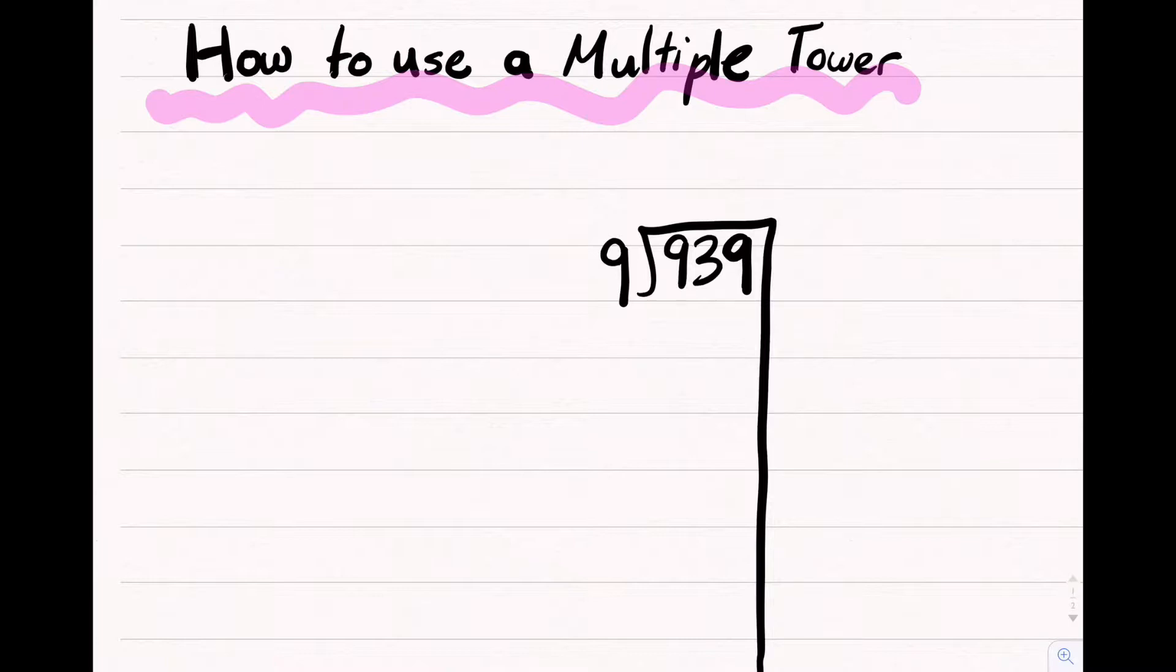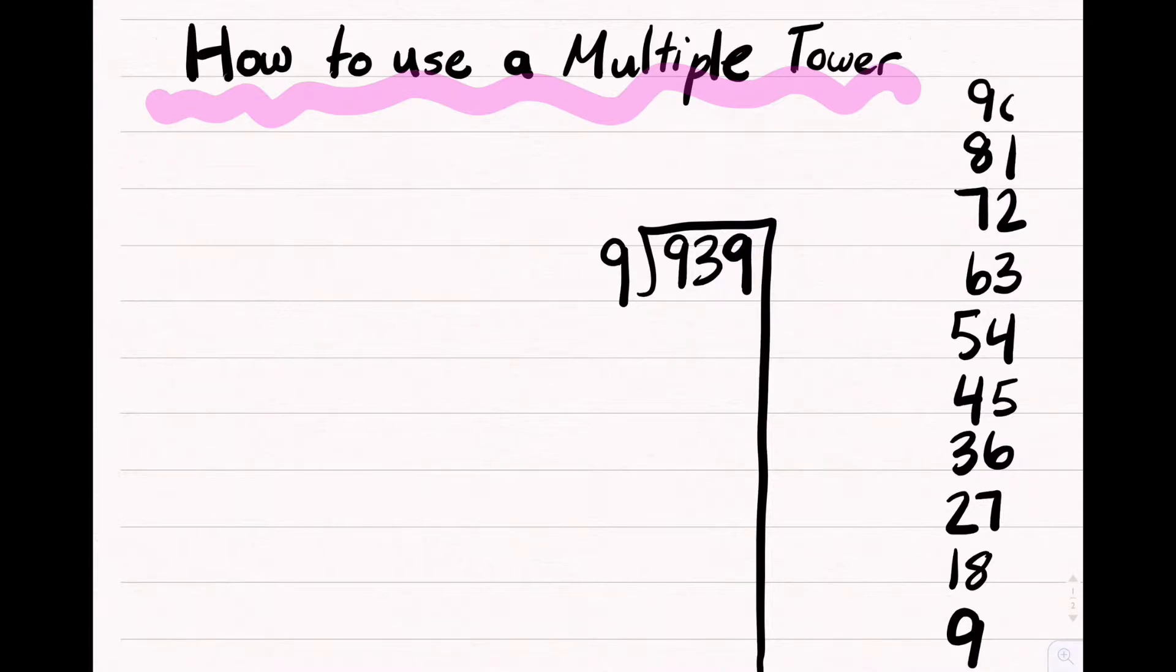You have to skip count. So while she is doing that, get a pencil and a paper and follow along. Pause the video if you need to. 78, 81, 90, and 99.